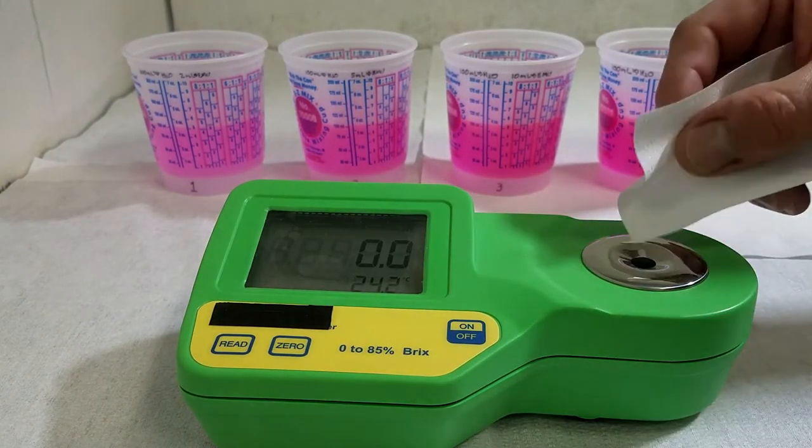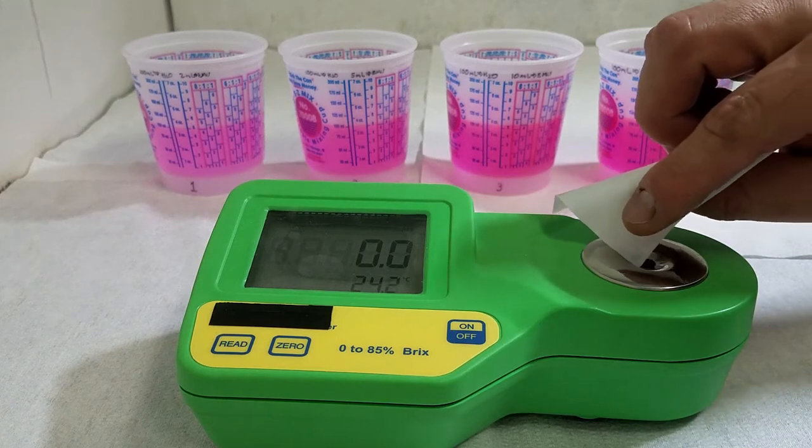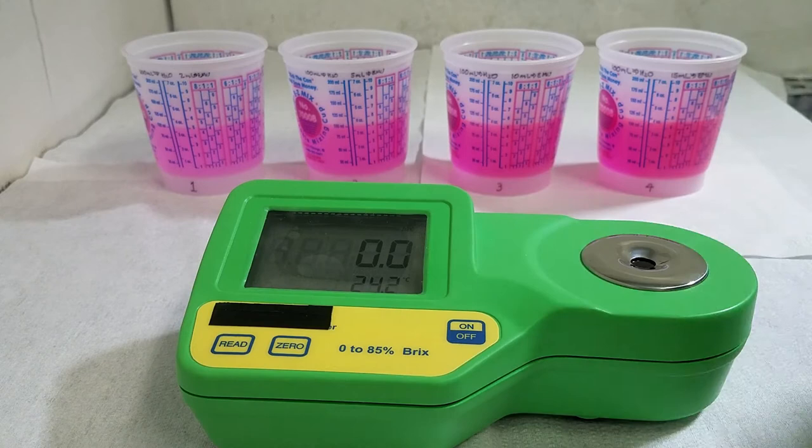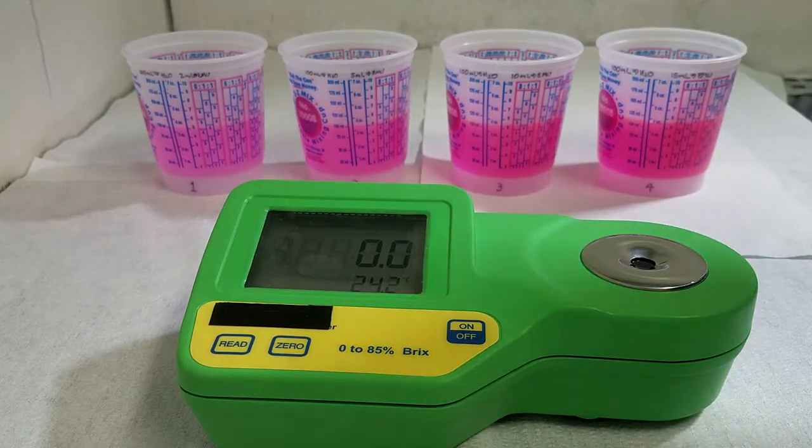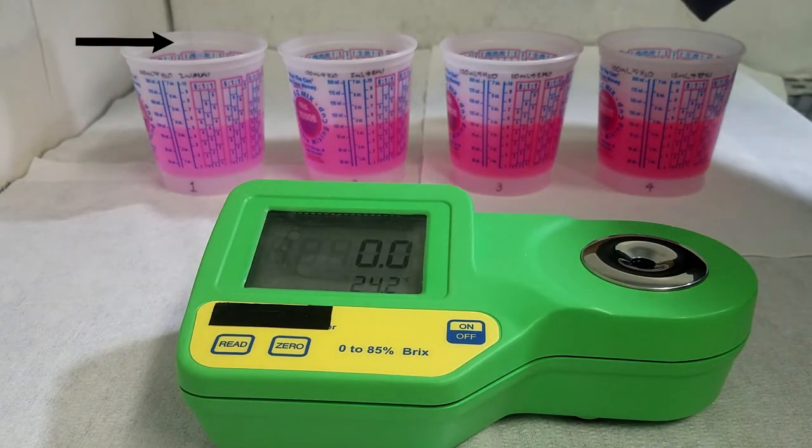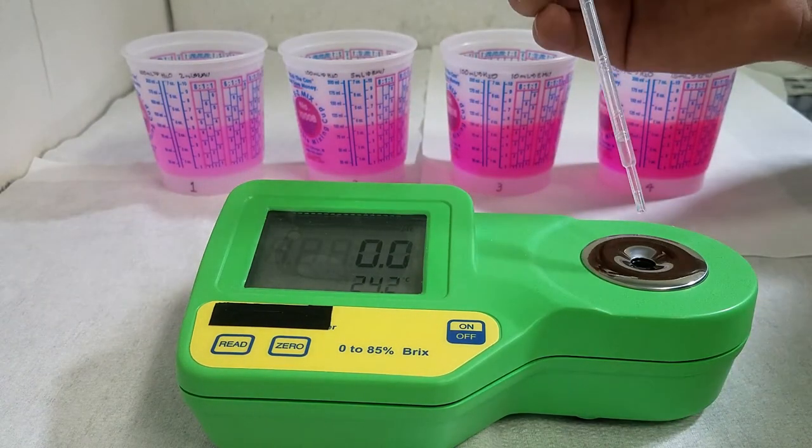If we don't get 0.0, then we are going to use the zero key to get the 0.0. That is the reference point. Remember to clean and dry the window sample to be ready for new measurement.